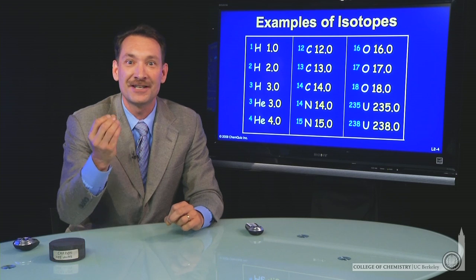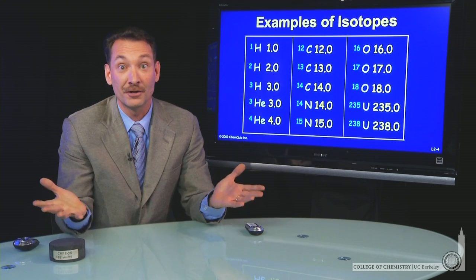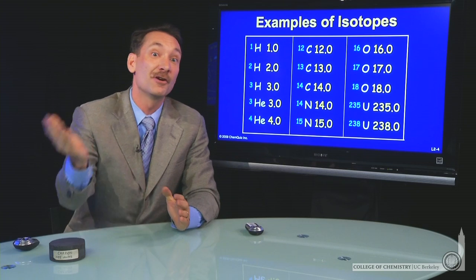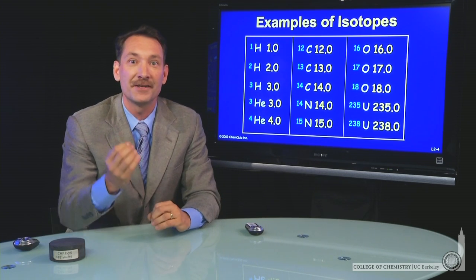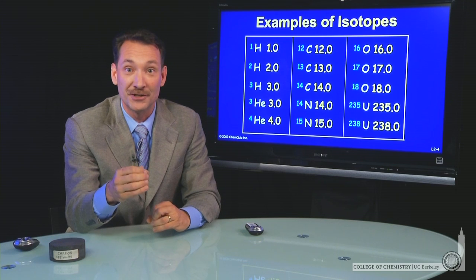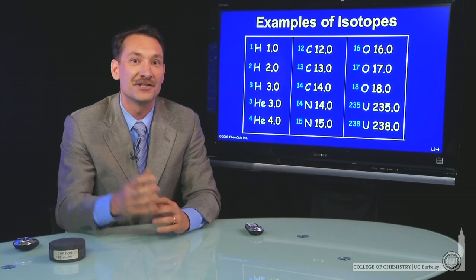So you can get ancient temperatures from the isotopes of water. And I'm sure you've all heard, in the days of global warming, we can look back in history and see what those temperatures are, and that's how we do it. We look at the isotopic ratios of water in ancient ice to determine ancient temperatures.